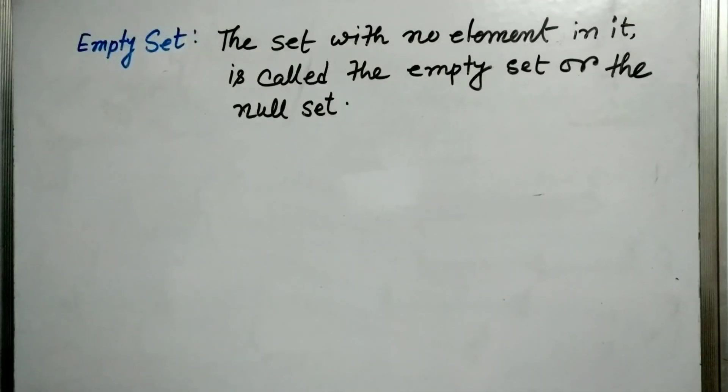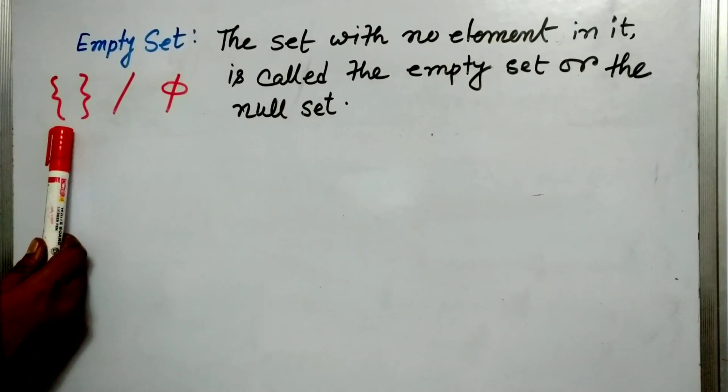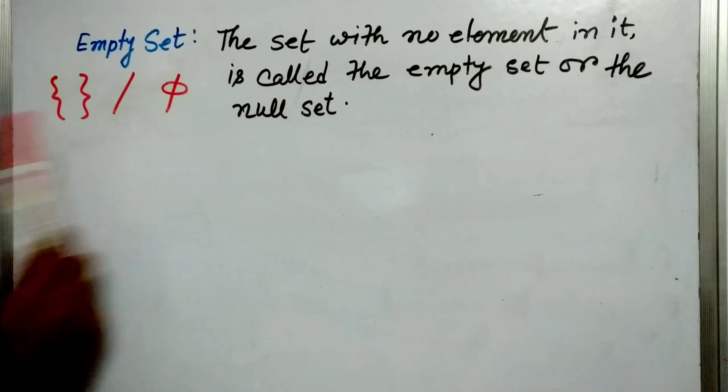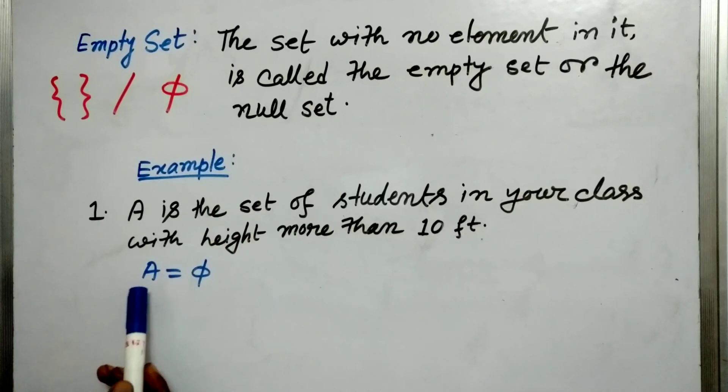Now let us talk about empty set. The set with no element in it is called the empty set or the null set. Now this set is denoted as this empty curly bracket {} or this phi (φ). So let us go for an example. A is the set of students in your class with height more than 10 feet. So definitely there is no one in your class whose height is more than 10 feet. So therefore we will denote A as φ because A is an empty set.